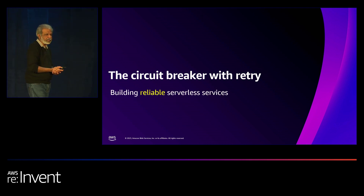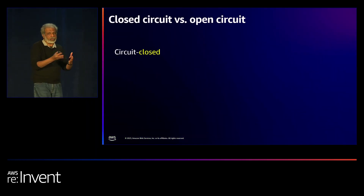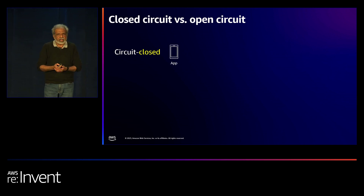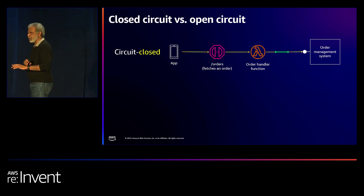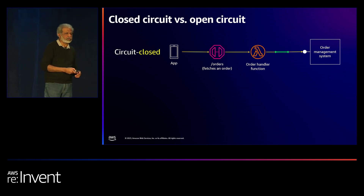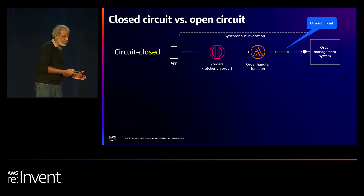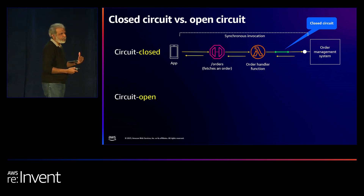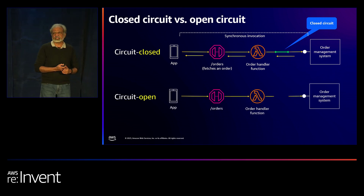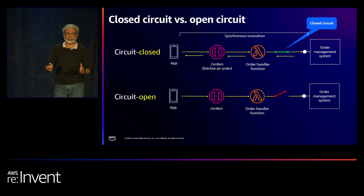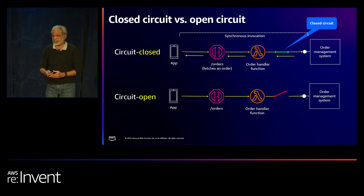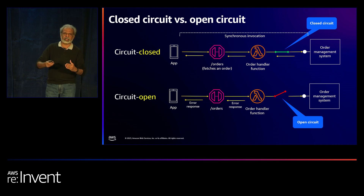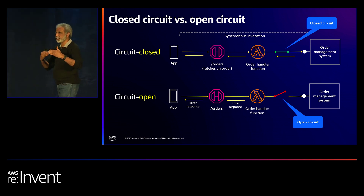If you're new to circuit breaker, the concept comes from electrical circuits. A circuit is closed when everything goes through fine — the green arrow means it's closed, everything is happy, a 200 OK going all the way through to your client. In an open circuit situation, you can't reach the target because it's down, so your circuit is marked as open — you return a failure or error response to your client. There is also a half-open state, but let's keep things simple.